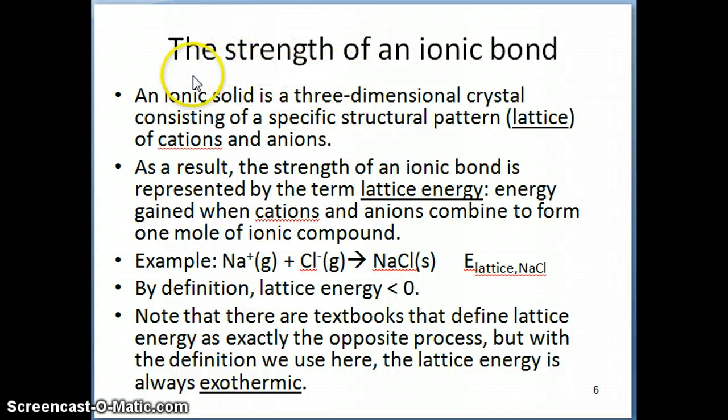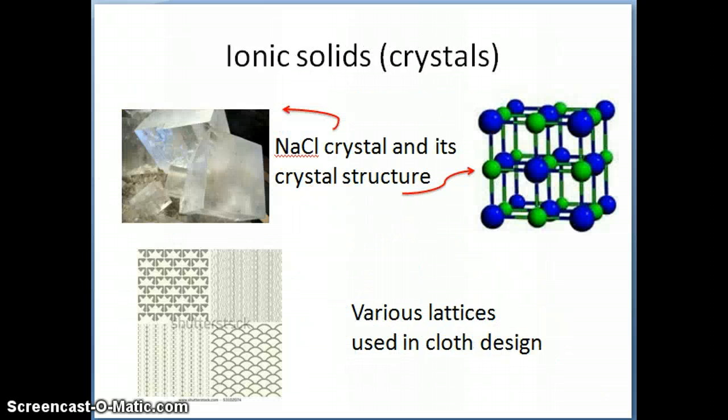First, we're going to talk about in general what an ionic solid or ionic compound is. An ionic solid is a three-dimensional crystal consisting of a specific structural pattern, and that structural pattern is what we refer to as a lattice pattern of cations and anions.